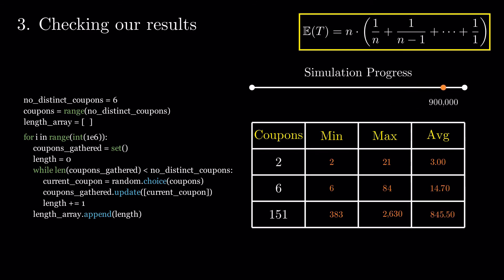What is also interesting is that while for 2 and 6 we had a perfect scenario of gathering our distinct values in the minimal number of tries, this did not happen for 151, even with the large number of simulations.